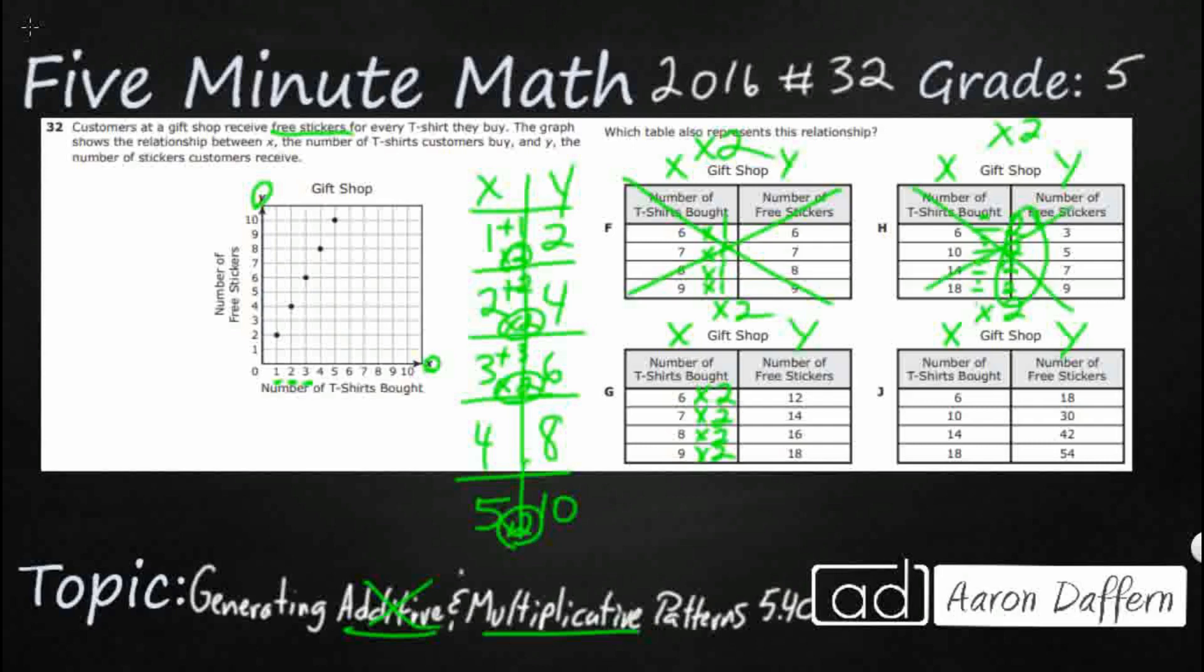And then, j is at least a multiplicative relationship. But take a look. You're multiplying by 3. 6 times 3 gets 18. 10 times 3 gets you 30. 14 times 3, 42. 18 times 3, 54. So, they at least multiplied. It's the wrong number, though. So, it is going to be g. You're going to multiply by 2, and that gets you your answer.